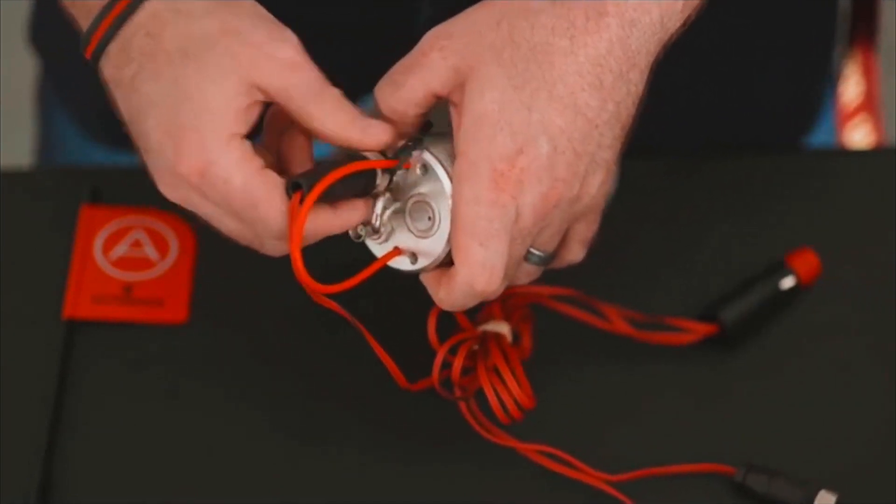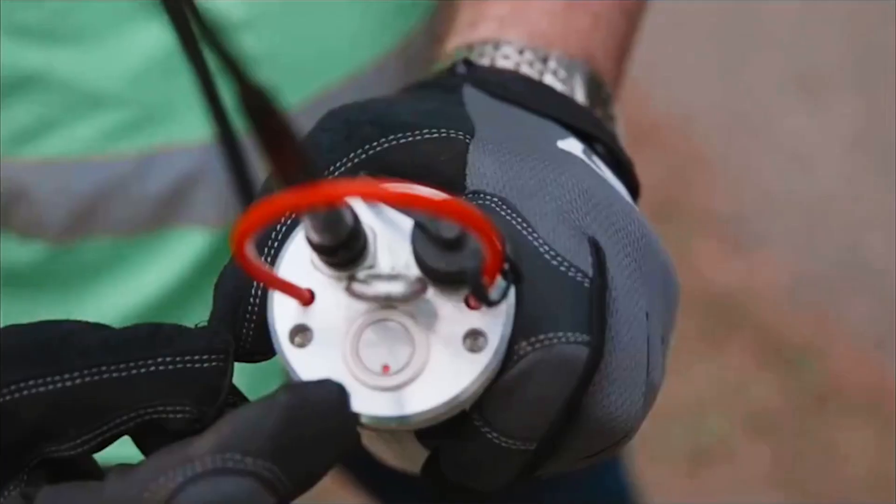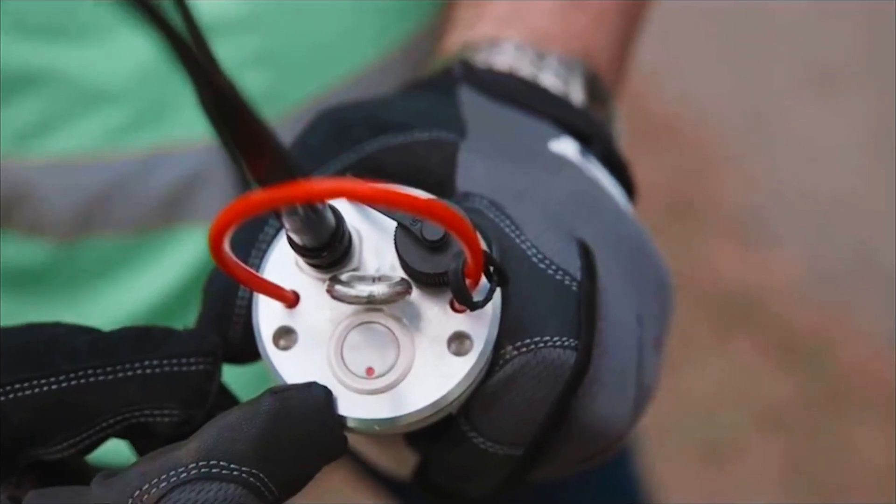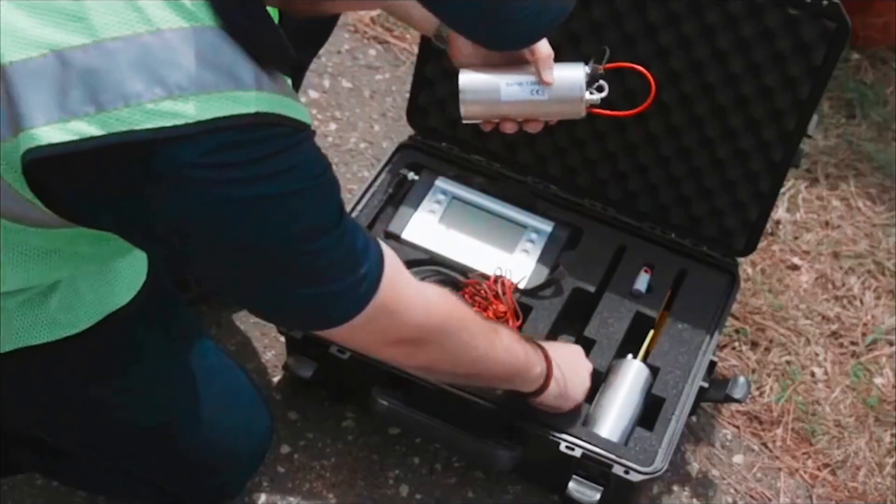While charging the sensors will remain in a blinking red state. When fully charged the red light will go off indicating that the charge is complete and the sensors are ready for use.